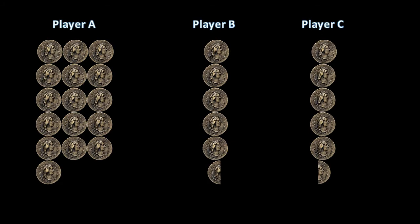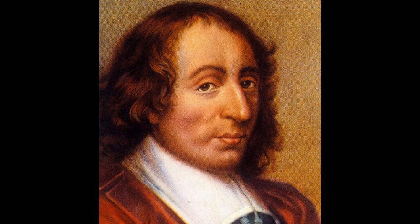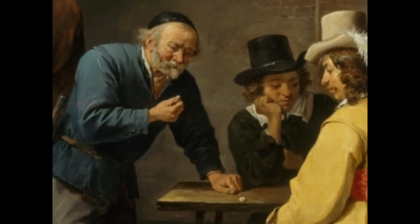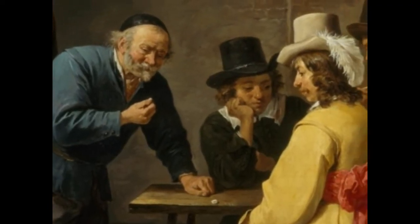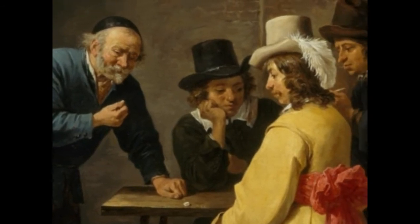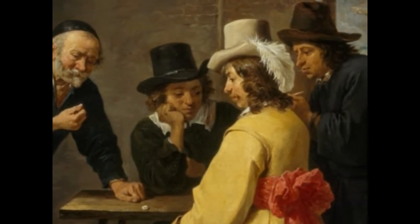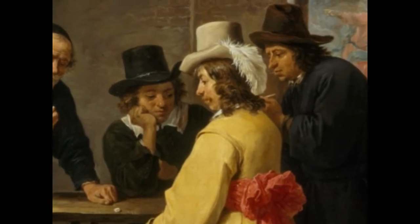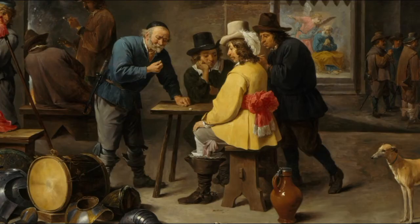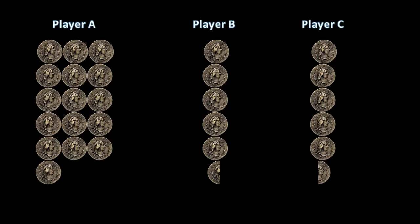But upon reaching that conclusion, Pascal immediately rejected it, telling Fermat: 'We are making a false assumption — that is, that they are playing three throws without exception, instead of the natural condition of this game, which is that they shall not play except up to the time when one of the players has attained the number of points which he lacks, in which case the game ceases.' Using his own recursion method, he had determined that player A should receive seventeen pistoles, with players B and C each receiving five. Fermat needed to explain the discrepancy.